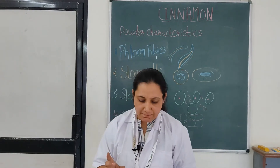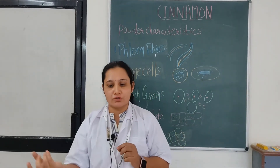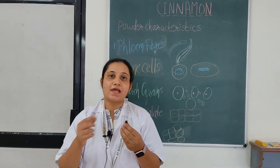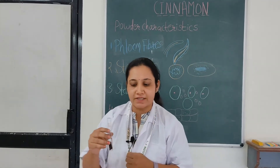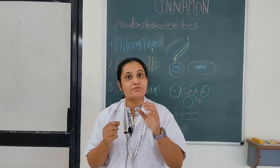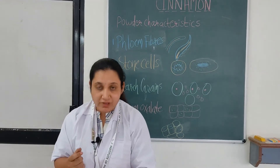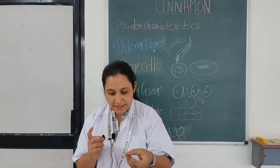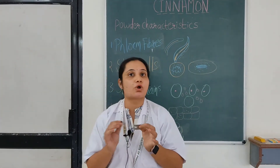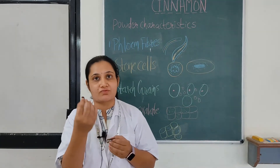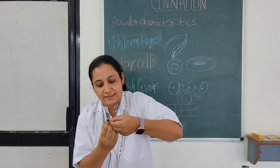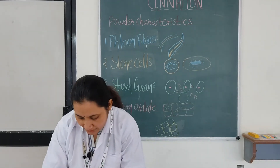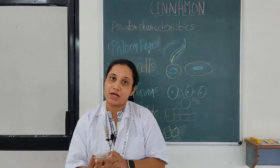For doing microscopy, the drug sample should be heated in water or chloral hydrate. We will take the cinnamon sample, add chloral hydrate, and heat it to make it soft. After heating, we will take out the sample, wash it with water, and then take a blade. Use the blade very carefully and keep it wet with water so that the cut section does not dry. Between two fingers and the thumb, we will cut 2, 3, 4, 5, up to 10 sections.